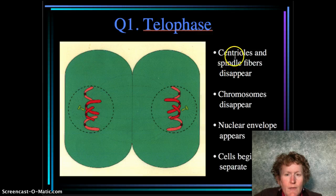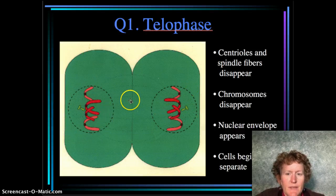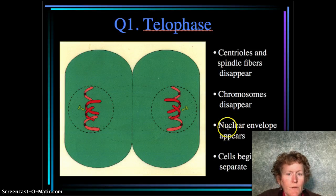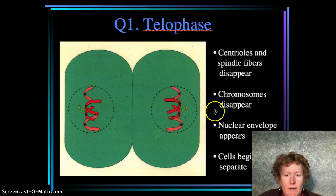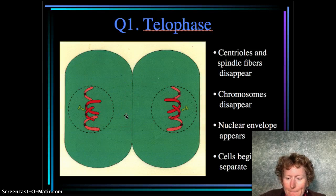Telophase is where the centrioles and spindle fibers disappear because they're no longer needed. All of the chromosomes are pulled into two opposite ends. The chromosomes appear to disappear — they're just not coiled as tightly so you can't see them. The nuclear envelope reappears, and the cells begin to separate with a membrane forming between the two.